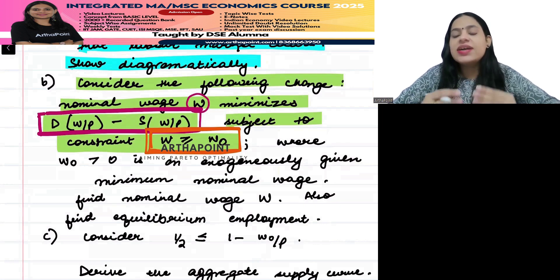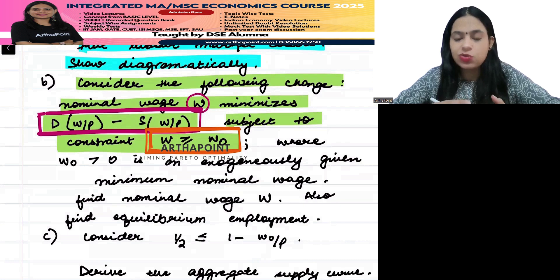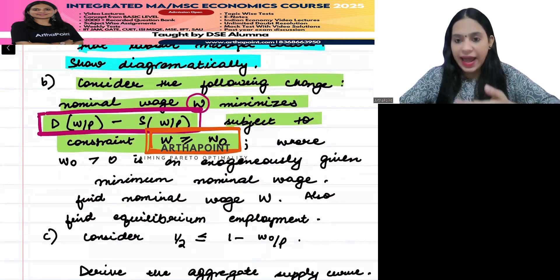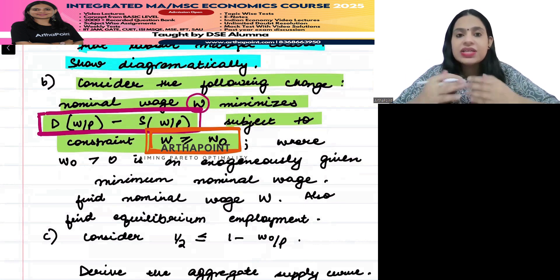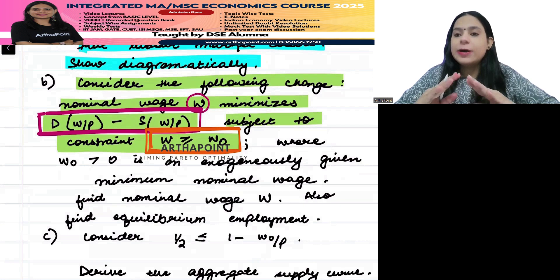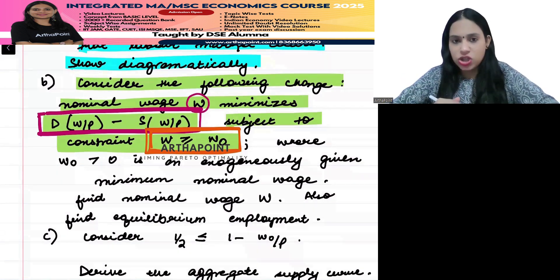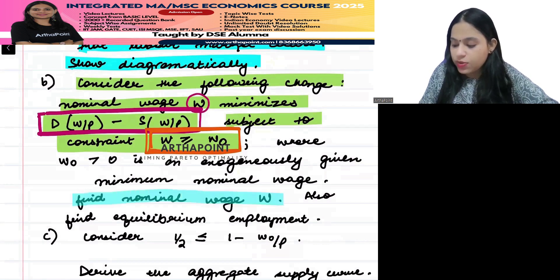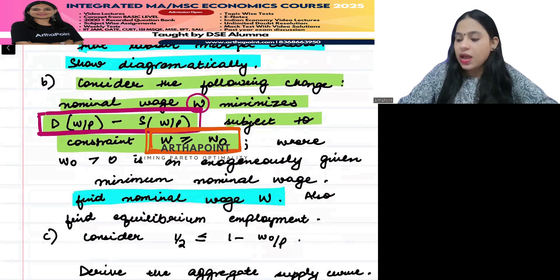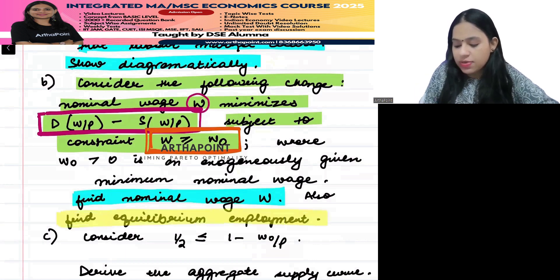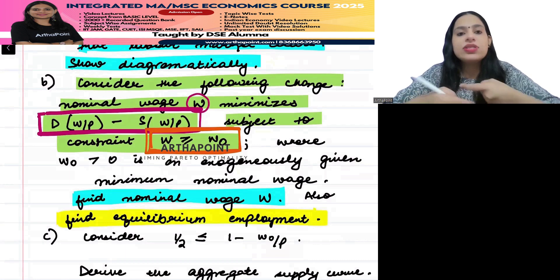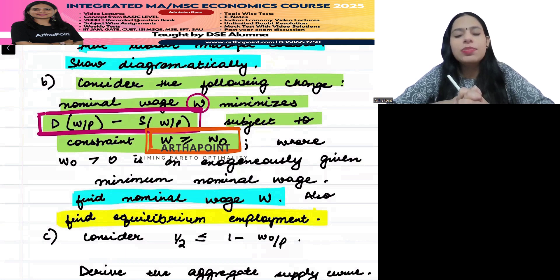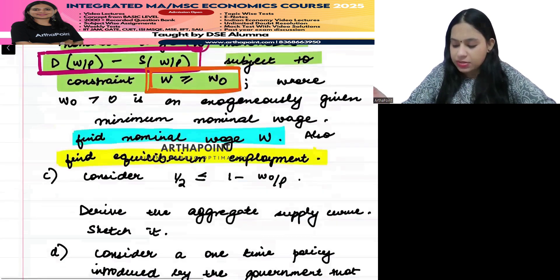Consider W naught as the minimum wage rate set by the government. So consider that there is a nominal wage W that minimizes the gap between demand and supply, but it is subject to the constraint that you have to be above your minimum wage level. Now go ahead and find that equilibrium nominal wage and the equilibrium level of employment.